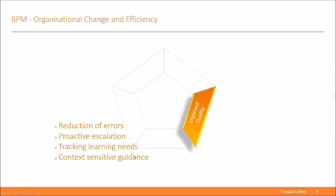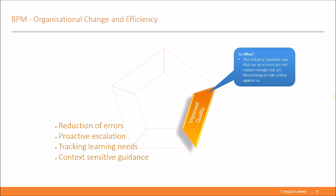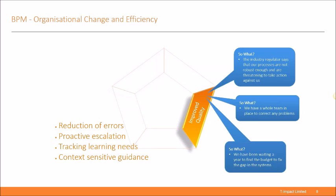Our fourth benefit is improved quality, relating to the reduction of errors and identifying where staff are under-trained and need help with training or guidance at the point of use. Regulators demand consistency and robustness in processes — if you don't get it right, you may have action taken against you. You might have put in place an entire team just to check errors and correct problems. This is costing a huge amount of money and simply isn't needed with a solution that removes errors at source.